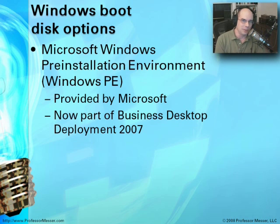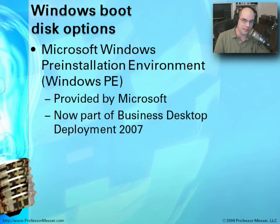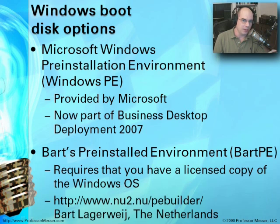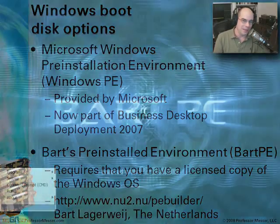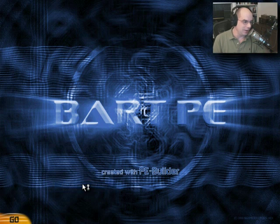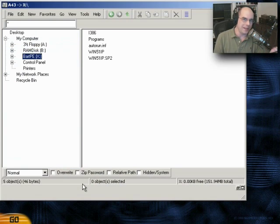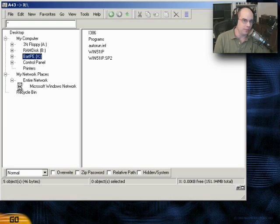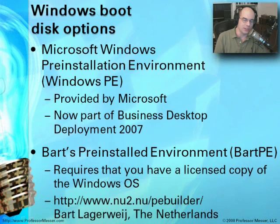Getting the full Business Desktop Deployment system can be a bit difficult, and maybe you just need a quick way to start Windows. A very popular pre-installed environment is called BART's Pre-Installed Environment, or BartPE, created by Bart Lagerwey in the Netherlands. It does require appropriate Windows licensing, but if you have that, you can boot into Windows using this pre-installed environment to perform the functions you need.